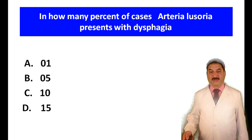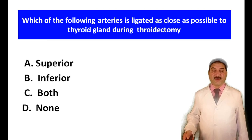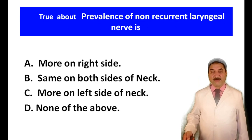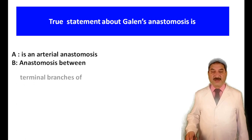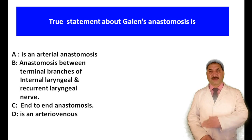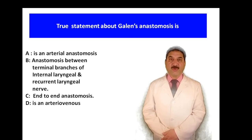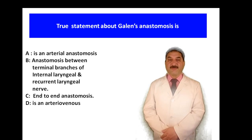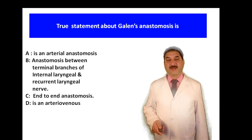Which of the following is ligated as close as possible to the thyroid gland during thyroidectomy? Superior thyroid artery, inferior thyroid artery, both, or none? Both is the correct option. Is the prevalence of non-recurrent laryngeal nerve more on the right side, or the same on both sides? Prevalence is more on the right side of the neck. Regarding Galen's anastomosis: it is an anastomosis between the branches of the internal laryngeal nerve and the inferior laryngeal nerve — B is the correct option. The mucosa above the vocal cords is supplied by the internal laryngeal nerve; below the cords by the inferior laryngeal nerve, a branch of the recurrent laryngeal nerve; and over the vocal cords by the anastomosis between their terminal branches, which is called Galen's anastomosis.